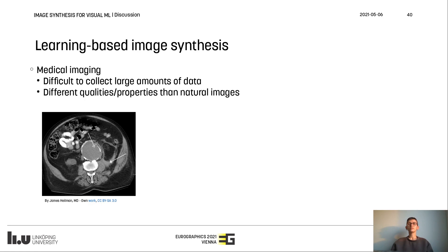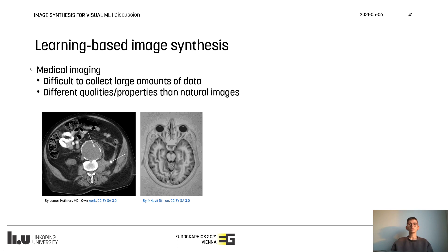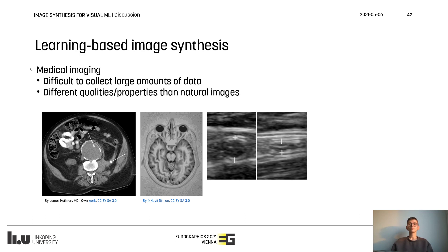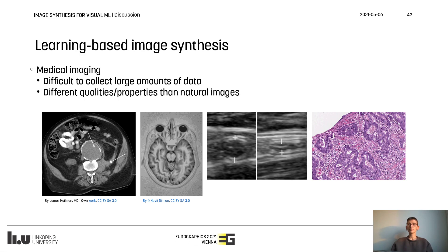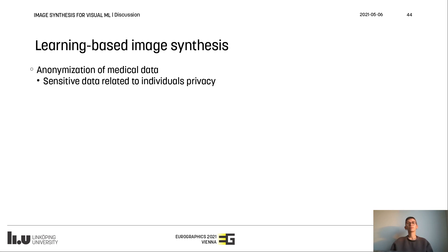Moreover, medical images are usually represented by different modalities than natural images, such as computed tomography scans, magnetic resonance imaging, ultrasounds, and digital pathology slides. It is therefore not possible to use classical image generation methods. In this way, GANs can be a suitable choice for image synthesis. Another issue that generative image synthesis attempts to tackle refers to anonymization of medical data. This is an important topic both in medical imaging and data sharing, in order to guarantee privacy for the test subjects.